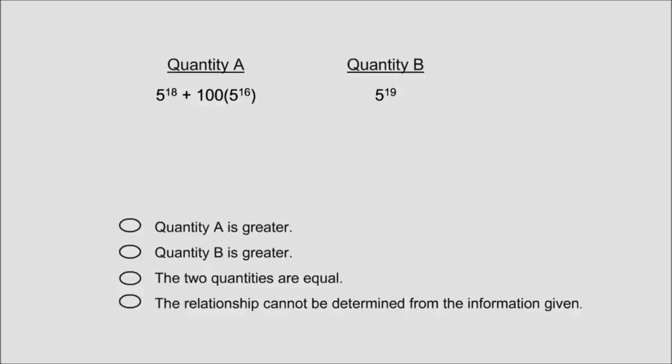So how do we solve this? Here's what you should observe as a strategic test taker: every term in both quantities has a power of five. All we have to do is divide every term in the problem by the smallest power of five that we see.